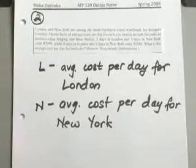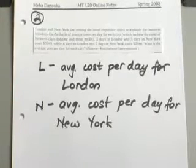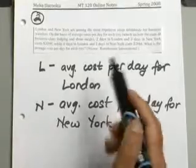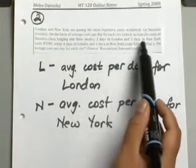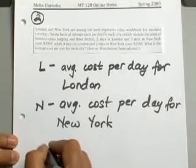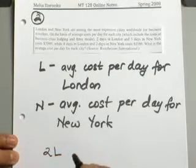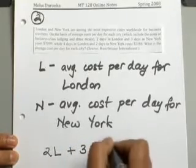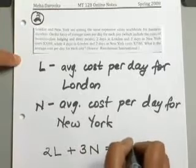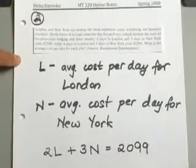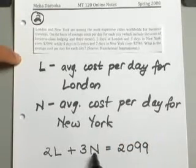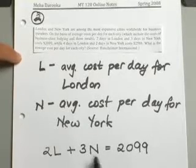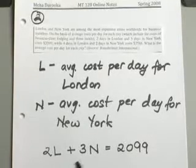Now after you assign your variables, you need to come up with your system of equations. In this example, it's actually pretty straightforward. They are telling you two days in London and three days in New York, so you can use that as two days in London, which will be 2L, and three days in New York, which will be 3N, costs you $2,099. So that is the total of spending two days in London and three days in New York.